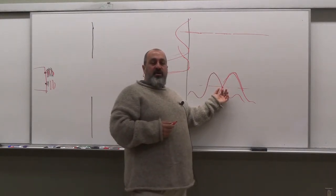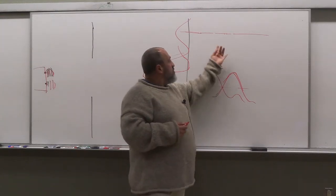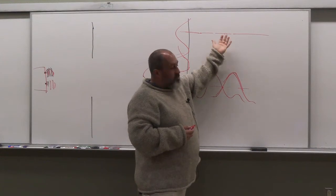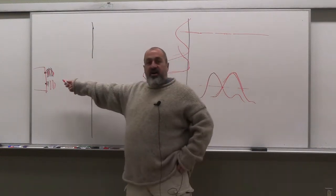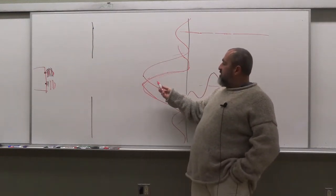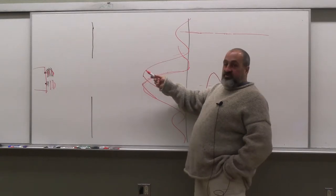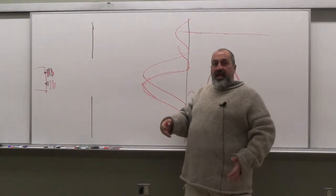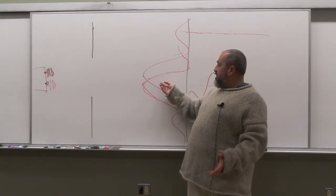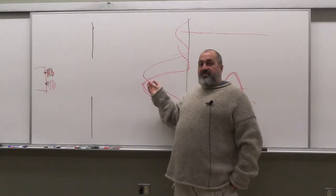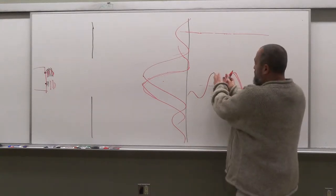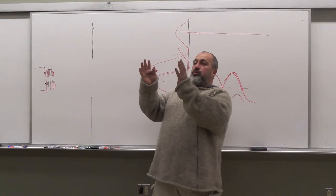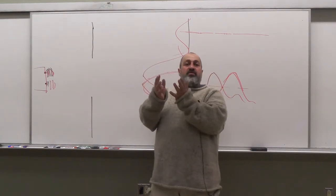But what happens now, because these two slits are so close to one another — if the car is really far from me, the further the car is away, the closer these two envelopes will be to one another. At some point, if the source is further away, these two envelopes will coalesce into one.